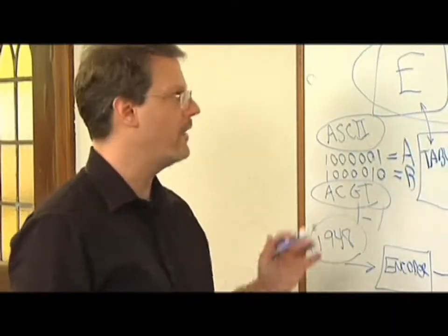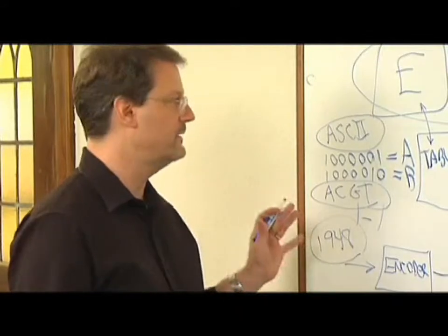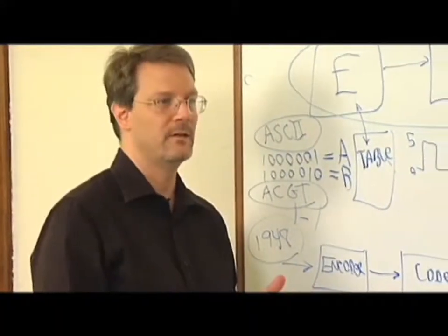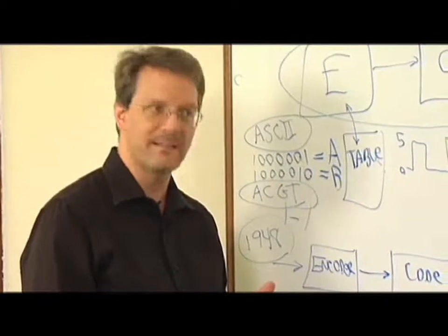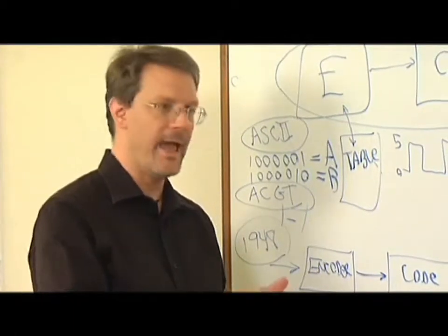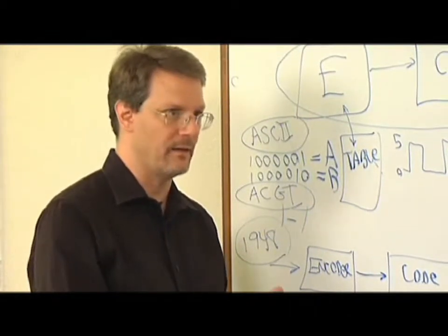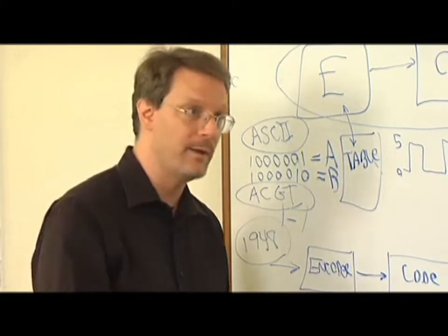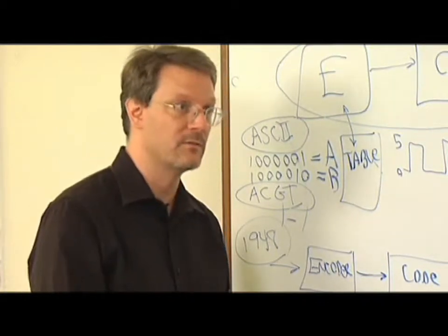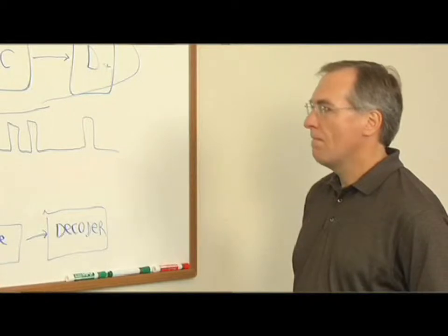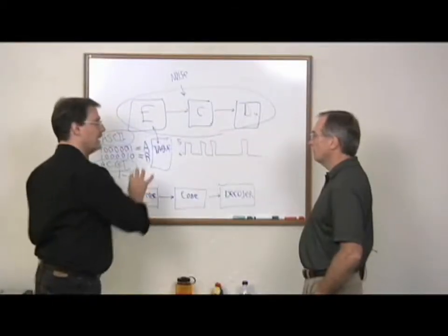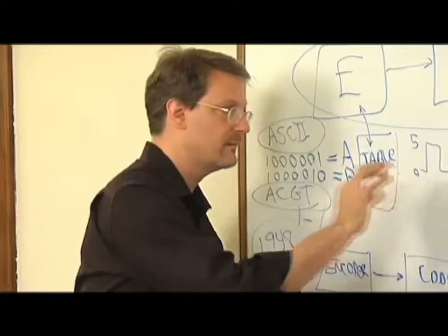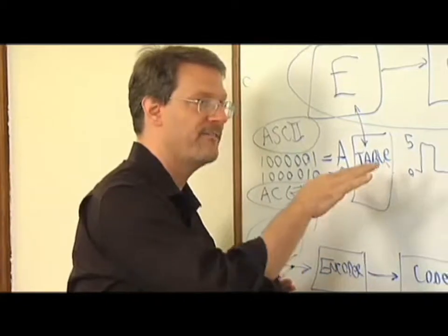The same thing is true in DNA. GGG represents glycine — GGG is not glycine. AAA represents lysine — it's not lysine. It's instructions to the ribosomes. That's what it is. It's instructions, and so it's symbolic.